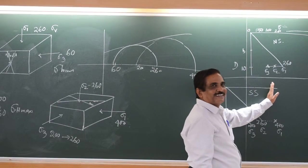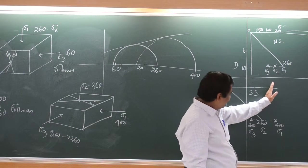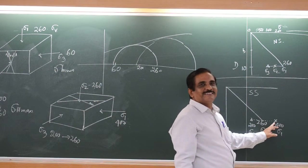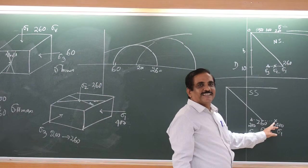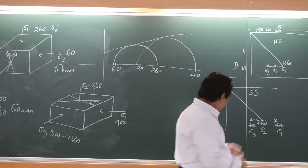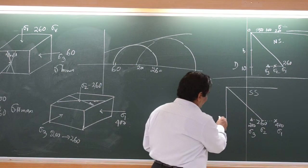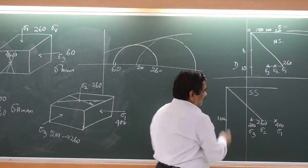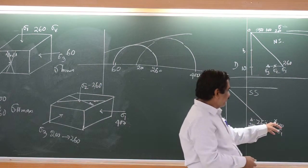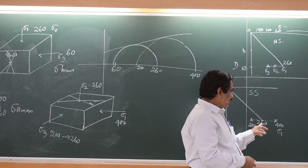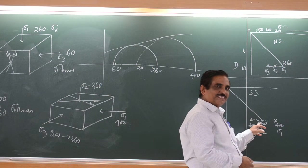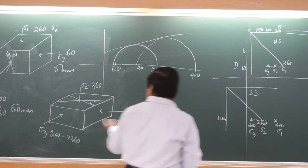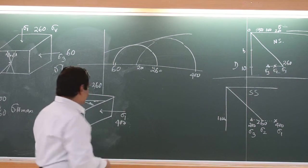So, 260 to 400. Wherever 400 comes, I have to plot this at the 10 km level. This is 10 km. Sigma 1 is 400, this is 260, and sigma 3 is 200. This will be on this side.